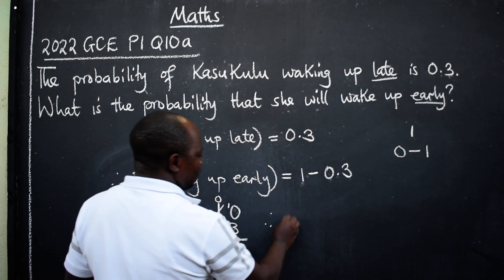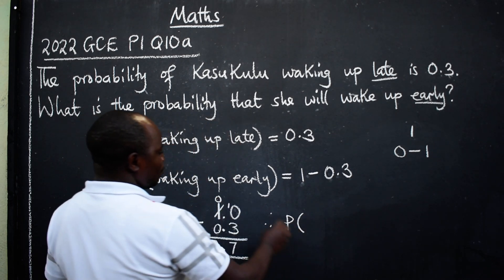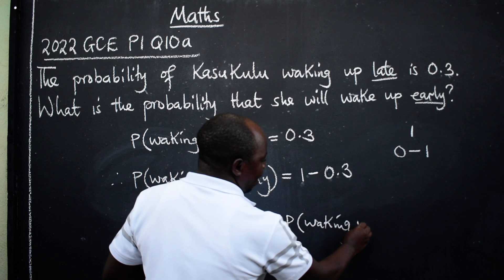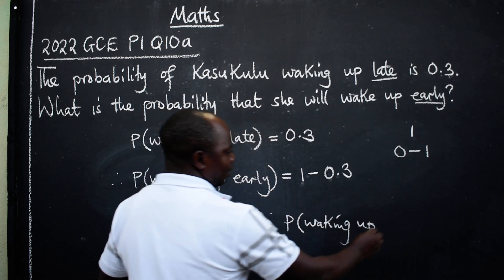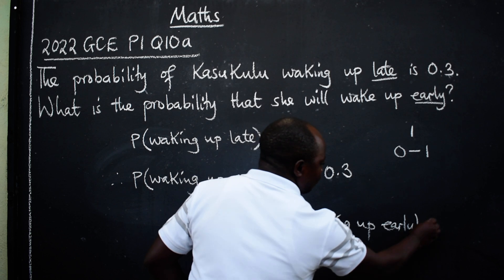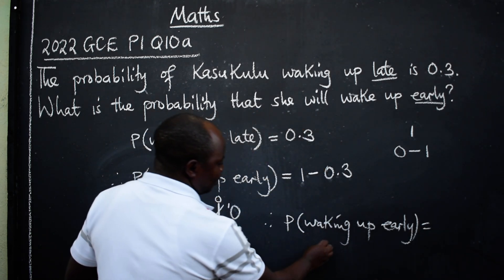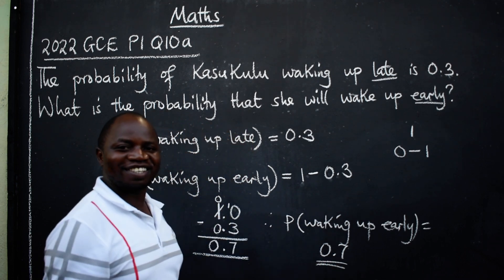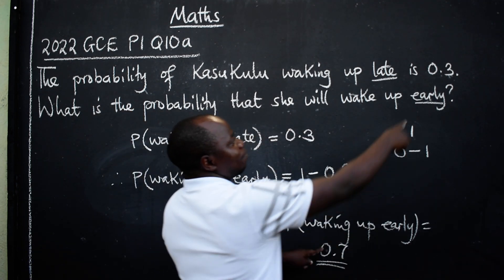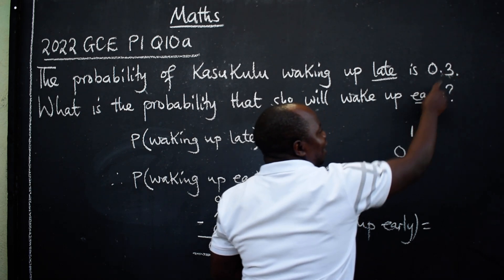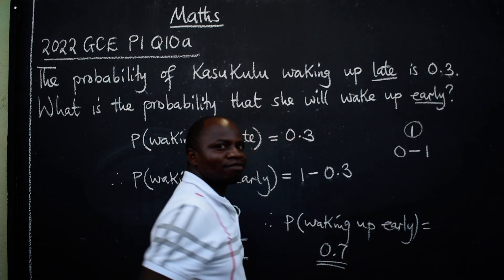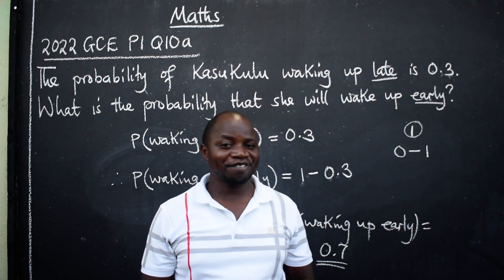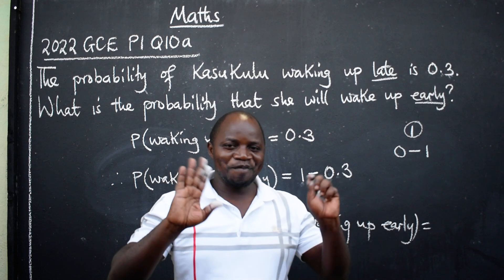Therefore we can conclude: the probability of waking up early is equal to 0.7. That is the answer. When I add 0.7 plus 0.3, I will get 1. That is the condition. I hope you have understood this. Bye-bye.